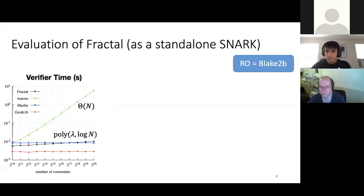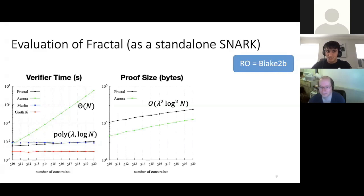In terms of proof size, we're twice as big as Aurora, so around 100 to 150 kilobytes. This is a nice exchange, negative and exponential verifier time improvement. I didn't plot Groth and Marlin here because I have to stretch the graph really far down. Those proof sizes are tiny, like 1 to 2 kilobytes.